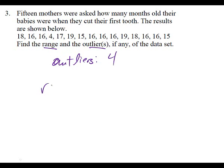To find the range, what are you supposed to do? Highest minus the lowest. What's the highest number there? Nineteen. And your lowest was four. So what's your range? Fifteen.